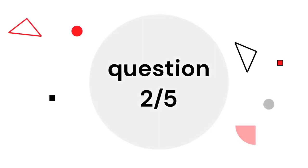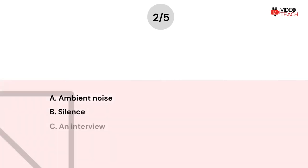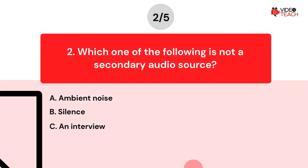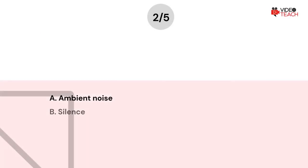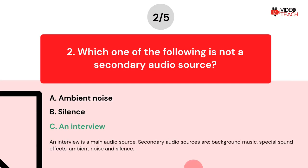Question number two. Which one of the following is not a secondary audio source? Option A: Ambient noise. Option B: Silence. Option C: An interview. The correct answer is option C. An interview is a main audio source. Secondary audio sources are background music, special sound effects, ambient noise, and silence.